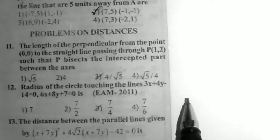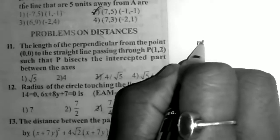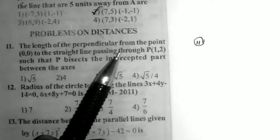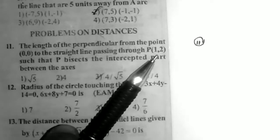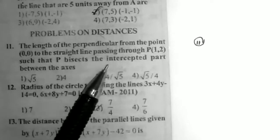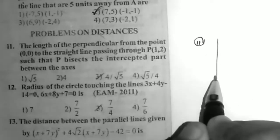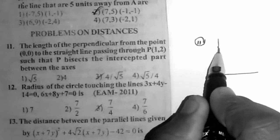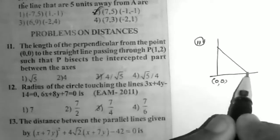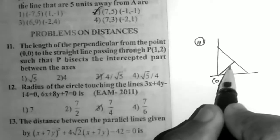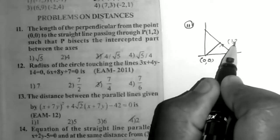In the last video I explained up to problem 10. Now I will start problem 11. The question is: find the length of the perpendicular from the point (0,0) to the straight line passing through the point P(1,2), such that P bisects the intercepted part between the axes. The line is bisected at the point P(1,2).